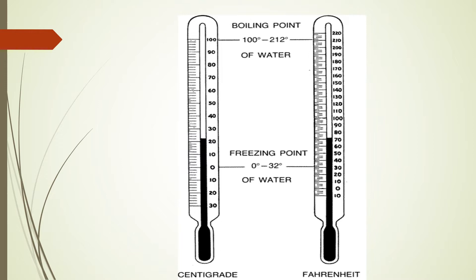There are three scales used for reading temperature in a thermometer: the Kelvin scale, the Celsius scale, and the Fahrenheit scale. The Kelvin scale is the SI unit of temperature, but it is not very commonly used. The most commonly used scales are the Celsius scale and the Fahrenheit scale.